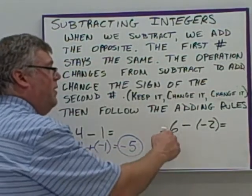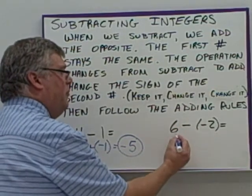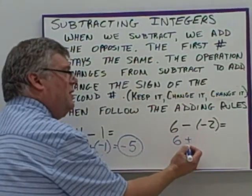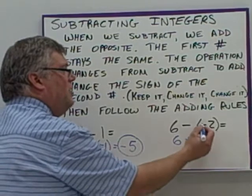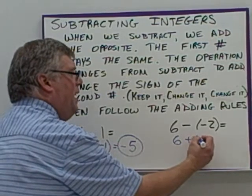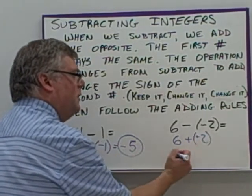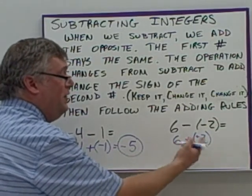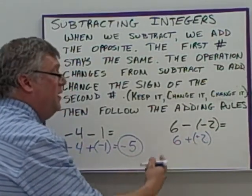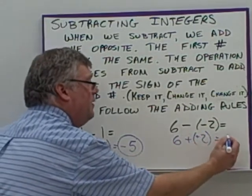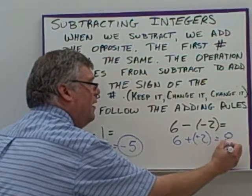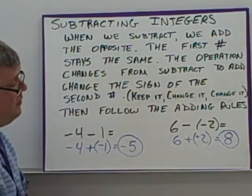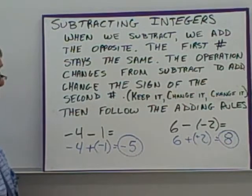Over here: keep it, change it, change it. Keep the 6 as a 6. Change subtraction to addition. Change the negative to a positive 2. So what we have is 6 plus 2, and 6 plus 2 is 8. Same signs means the same sign for the answer. The answer is positive 8.